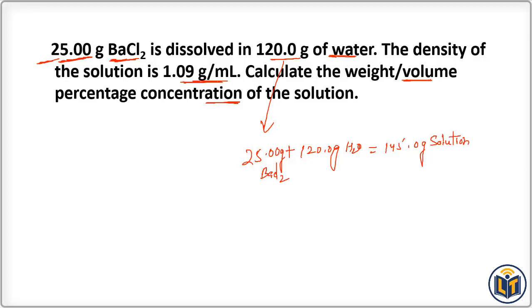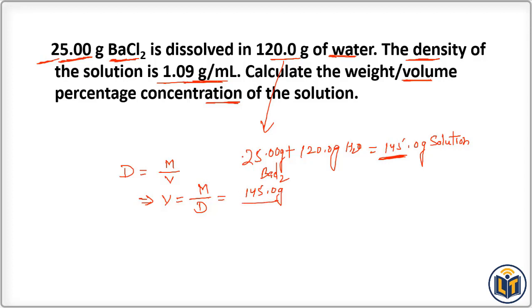Next, we use the density of the solution, which is 1.09 grams per ml. We apply the density formula: density equals mass divided by volume. Rearranging to find volume: volume equals mass divided by density. The mass of the solution is 145.0 grams and the density is 1.09 grams per ml.